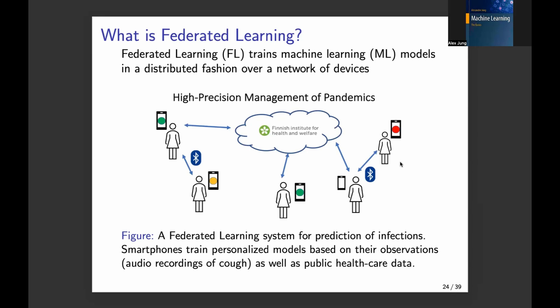This is an example of a federated learning system where each device — each smartphone — trains its own model, a personal model for you. If you have a smartphone with this app, you get optimal predictions for you. And to learn how to do these predictions, these federated learning components cooperate with each other. So there's a cooperative aspect in federated learning.